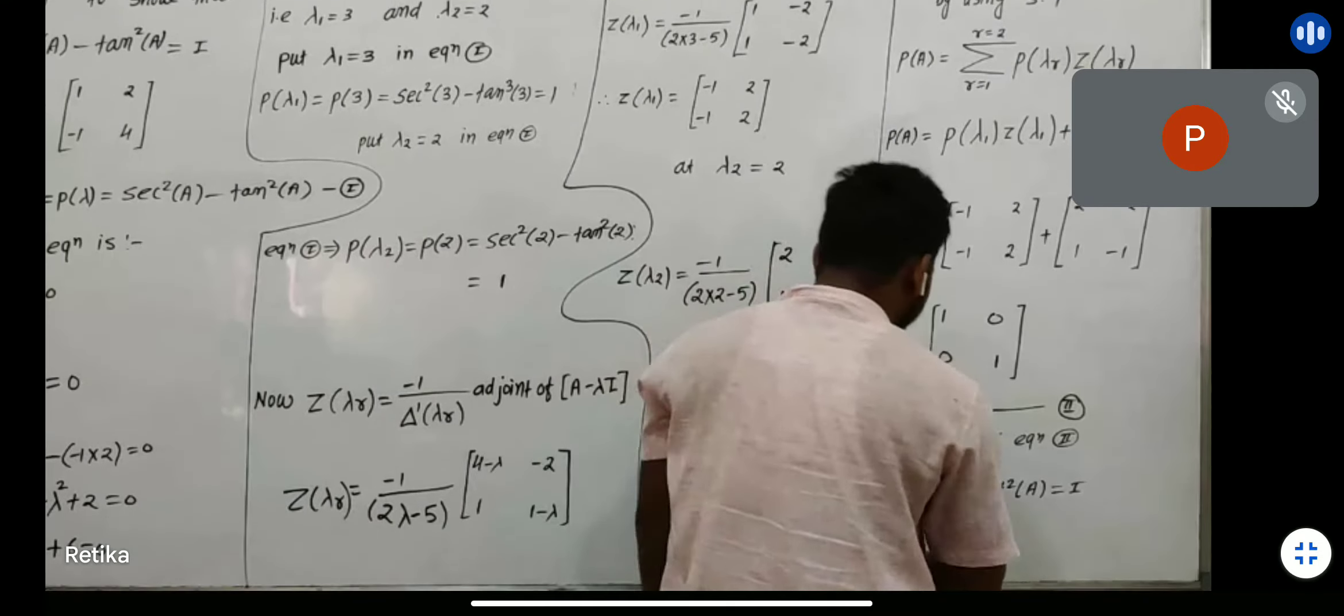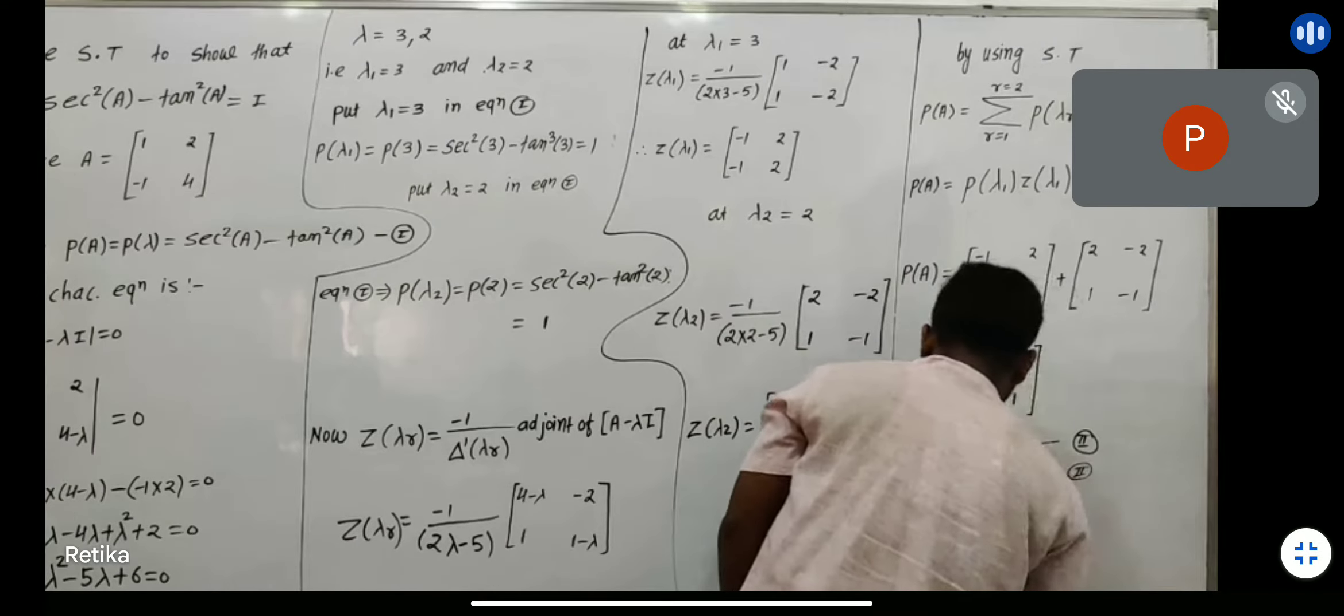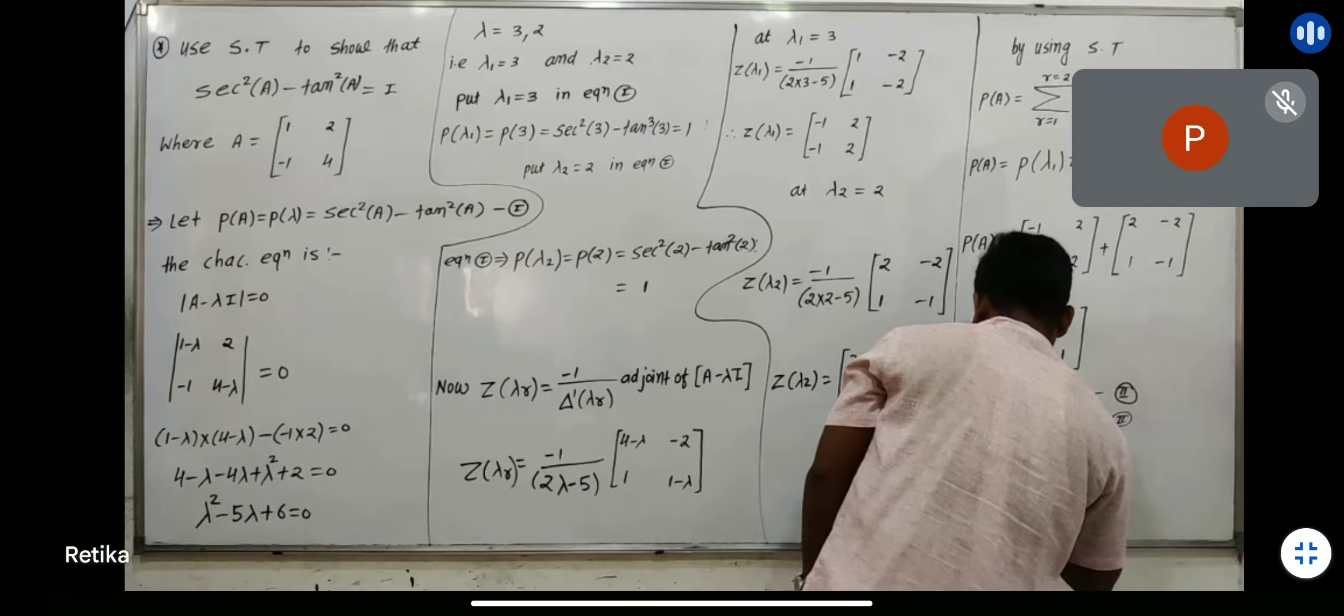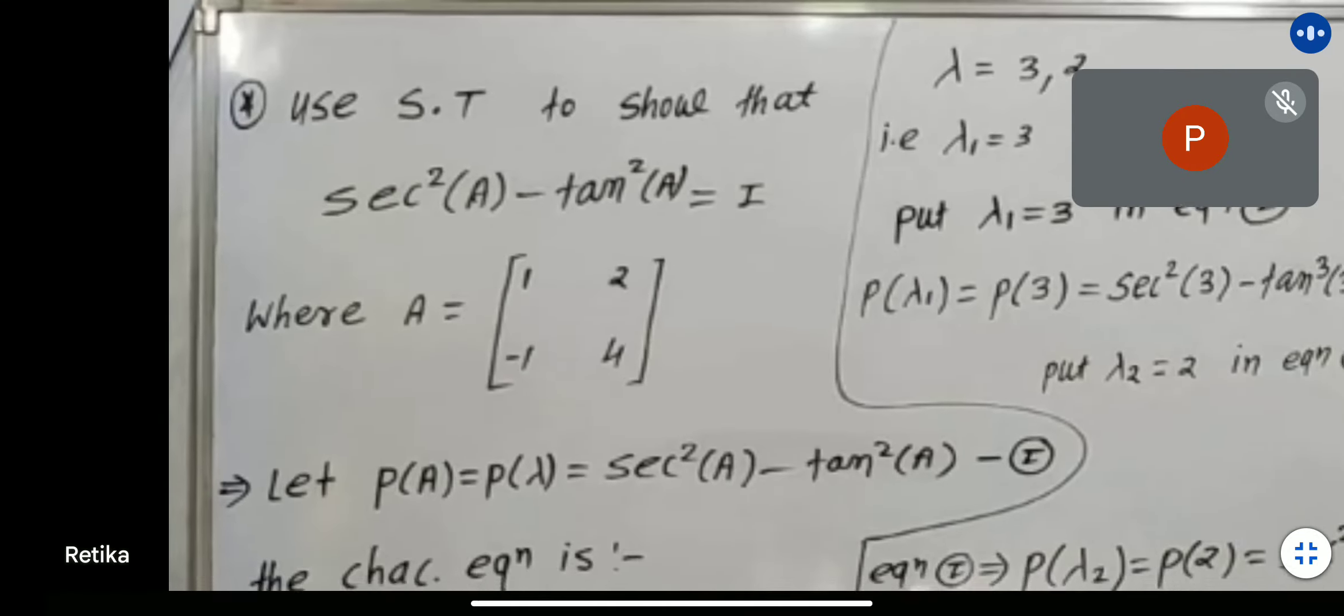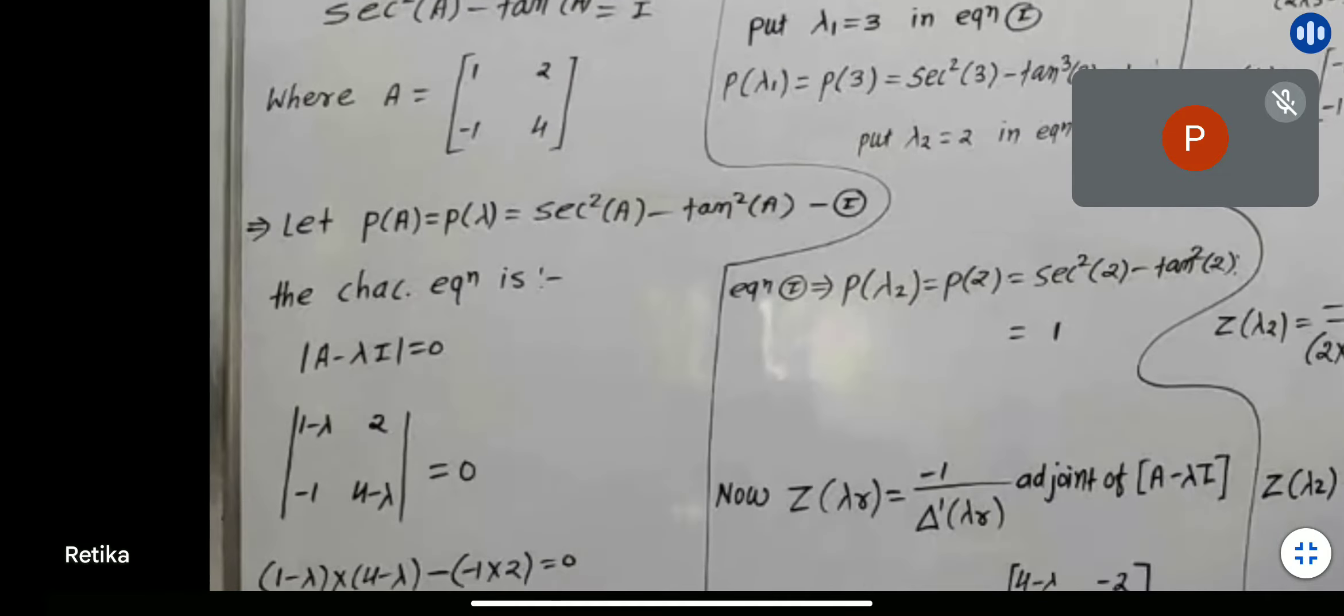What will happen in the final answer? From equation 1 and 2, sec square a minus tan square a equals i.